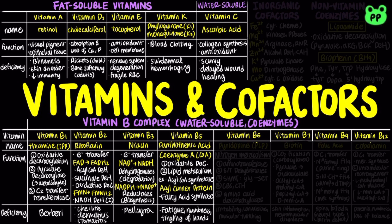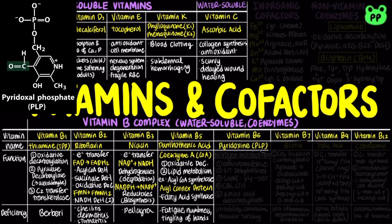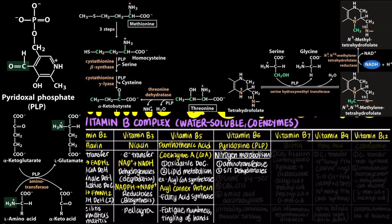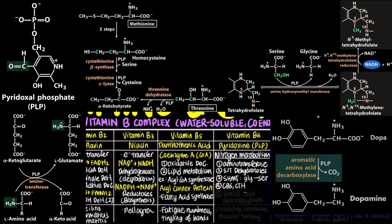Vitamin B6, also known as pyridoxine, is converted to its active form pyridoxal 5-phosphate, or PLP, in our body. PLP transfers amino groups in various reactions in amino acid metabolism, including aminotransferases, serine-threonine dehydratases, serine hydroxymethyltransferases, or SHMT, cystathionine-beta-synthase, or CBS, cystathionine-gamma-lyase, or CTH, and amino acid decarboxylases. Deficiency in vitamin B6 leads to irritability, convulsion, and muscular twitching.